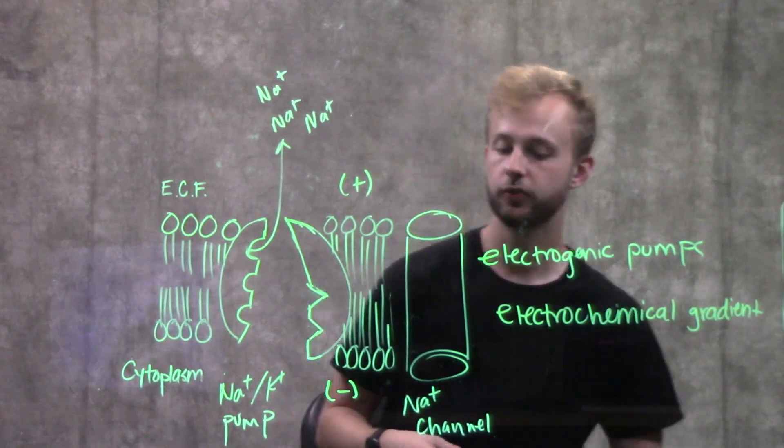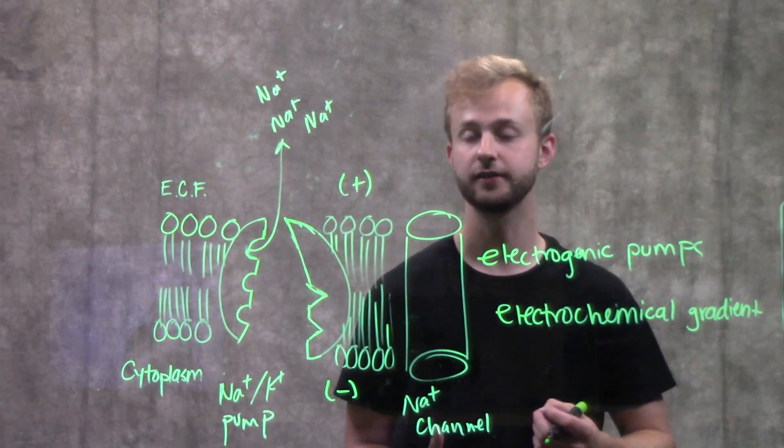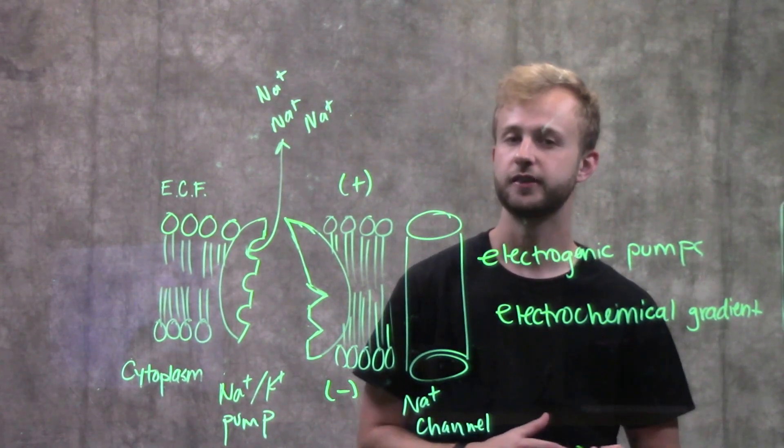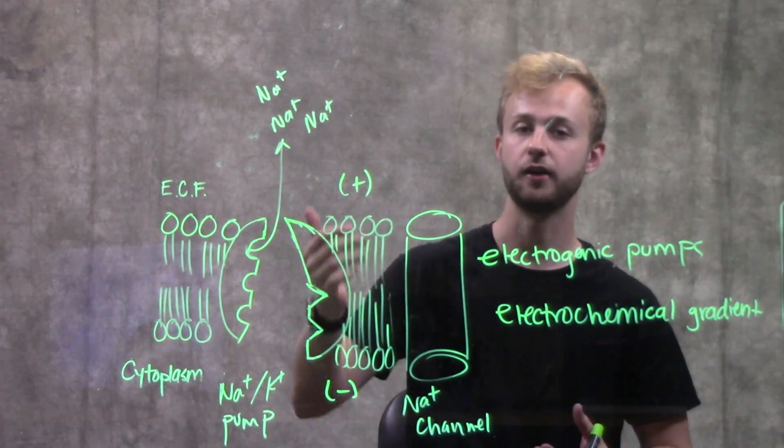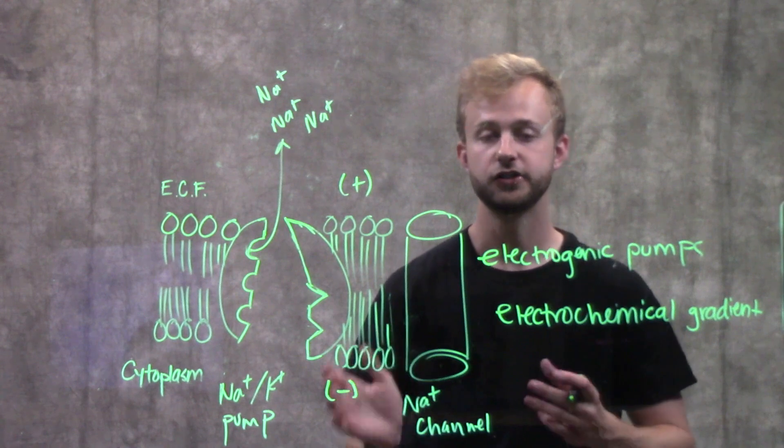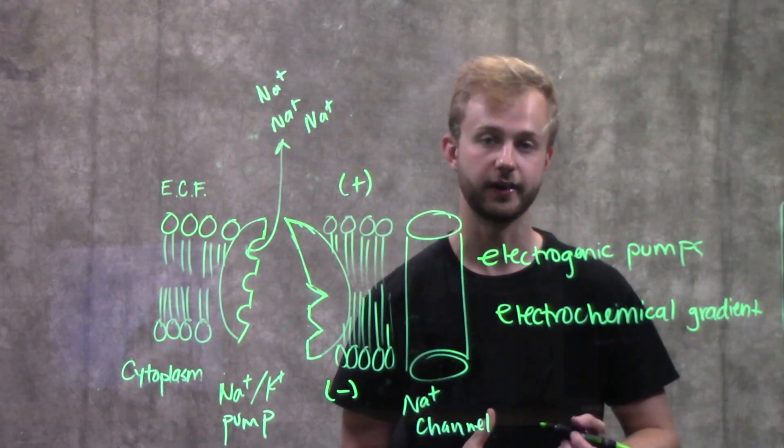So the electrochemical gradient is very important for the movements of any kind of ion, whether it be into or out of the cell. We can change our definition of diffusion for an ion, and instead of an ion moving down its concentration gradient, change that to it's an ion moving down its electrochemical gradient.